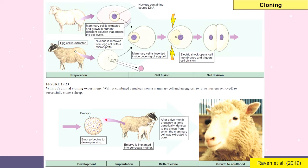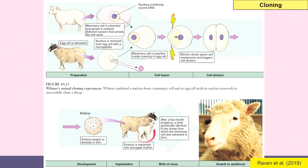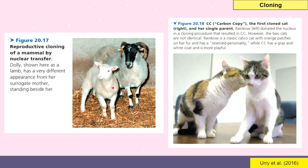Cell division continues until the egg becomes an embryo, which is then implanted into a surrogate mother — the black-faced sheep. After a five-month pregnancy, a lamb genetically identical to the mammary cell donor was born. Even though the surrogate mother was a black-faced sheep, the offspring had a white face because the genetic material — the nucleus — came from the white-faced sheep donor. This lamb was a direct genetic clone of the donor, and when it reached adulthood, this was Dolly — the very famous first cloned sheep.